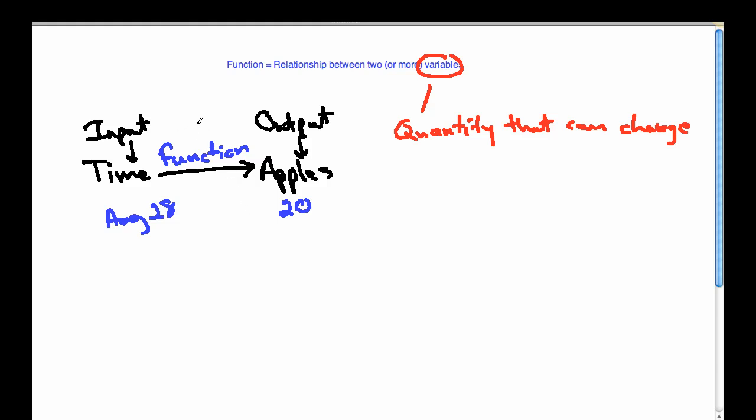So sometimes we give these functions names. Like I might call this apples as my function name. So if I take my function and put in August 28th, I get out 20. That's how my function works. It's like a little machine. This input variable we often call the independent variable.